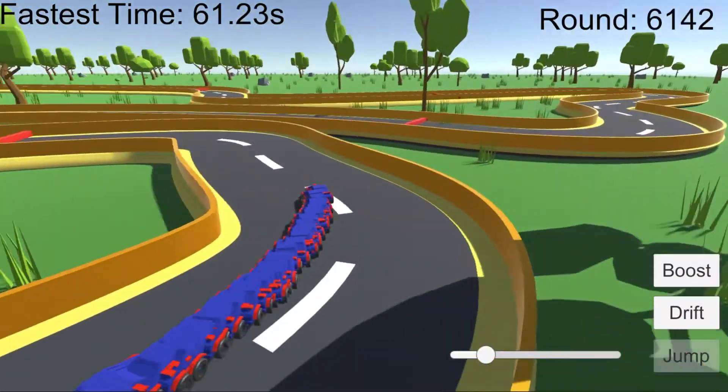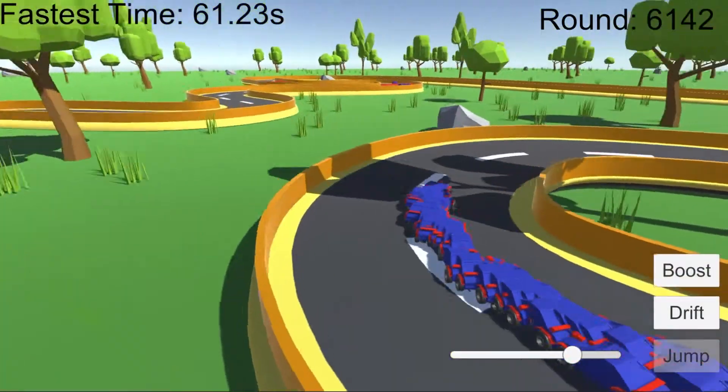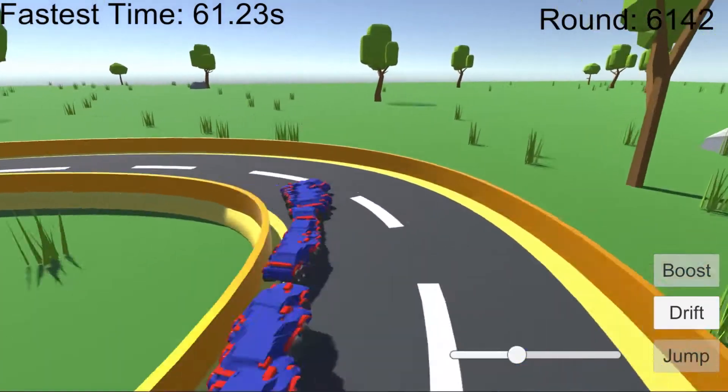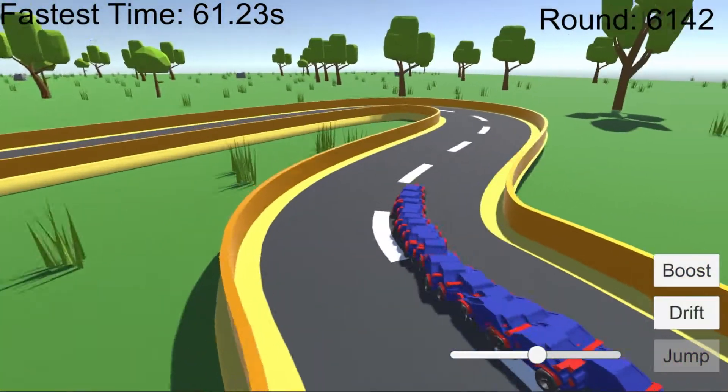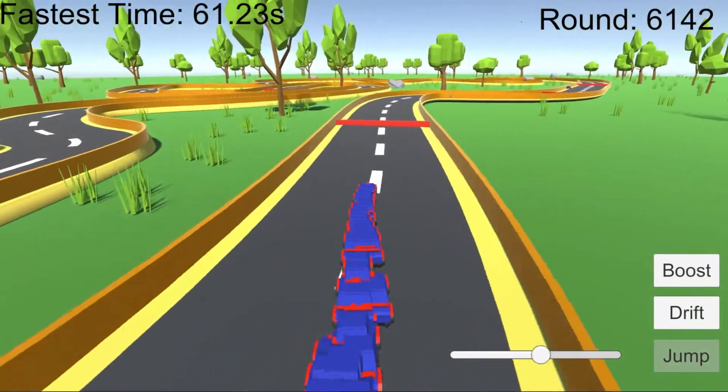And this may seem like it would hurt the training rather than help it because you're losing your best performers. But it turns out that this helps them prevent finding local minimums. Sure, you might lose out on the best car every once in a while. That actually gives the cars with different strategies a chance to show that that strategy might be better than the current best.